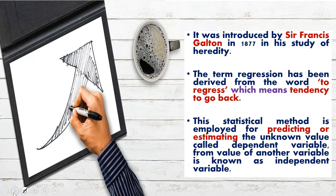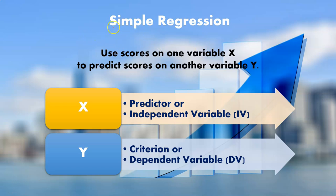Regression was introduced by Sir Francis Galton in 1877. The term 'regression' is derived from a word meaning 'the tendency to go back to normal.' The main function of regression is prediction — estimating an unknown dependent value from the known value of an independent variable. If you know the value of the independent variable, we can predict or estimate the value of the dependent variable.